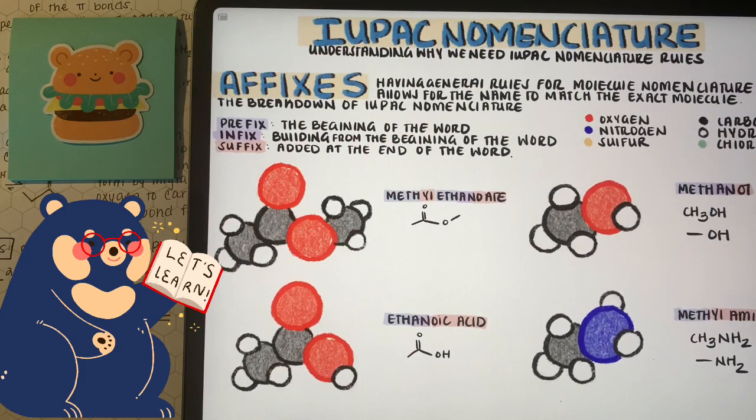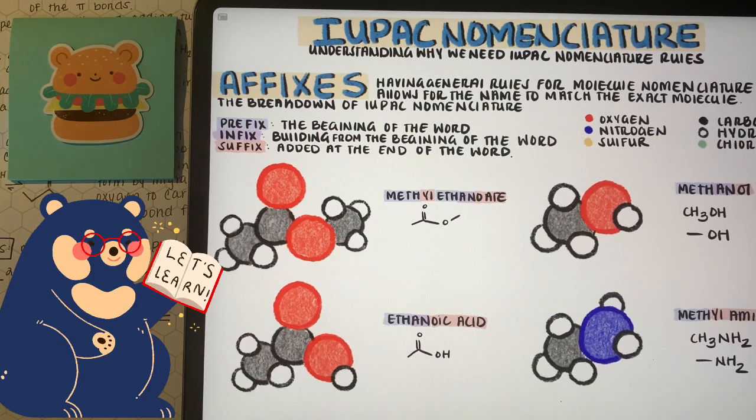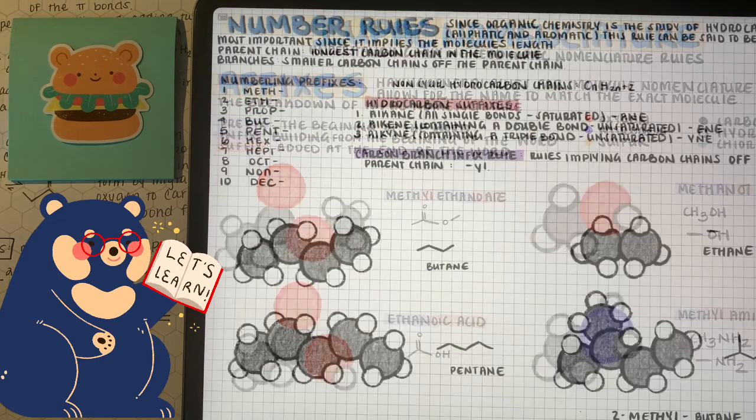Now we're ready to dive into the nomenclature rules. One of the things about nomenclature is that it's built on affixes, prefix, infix, and suffix. Changing the prefix, infix, and suffix of words changes the molecule's shape, structure, and functional groups.